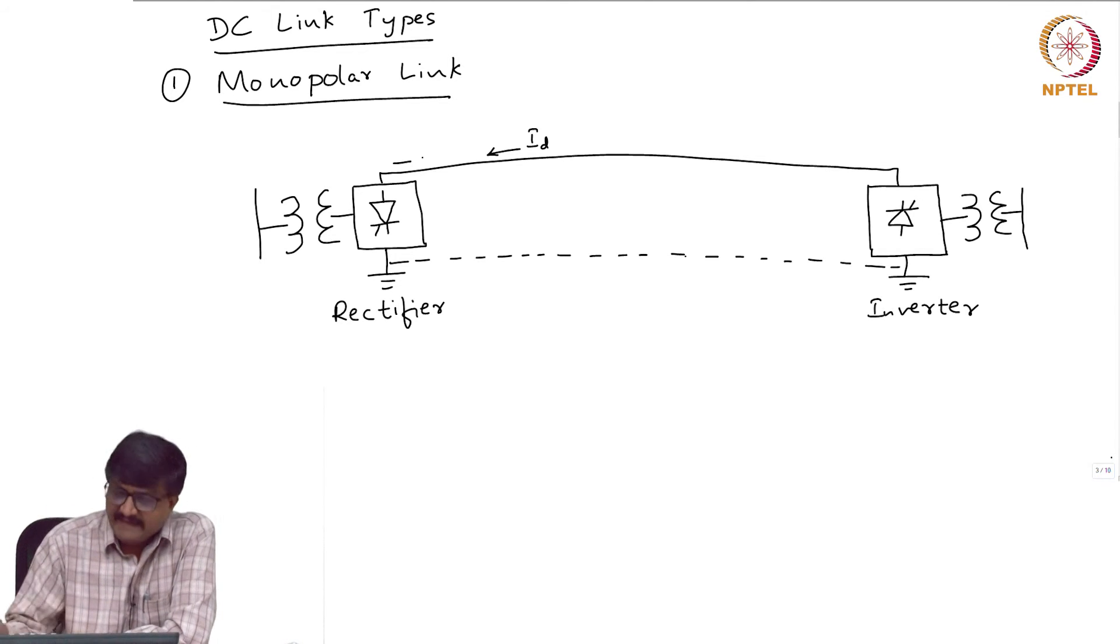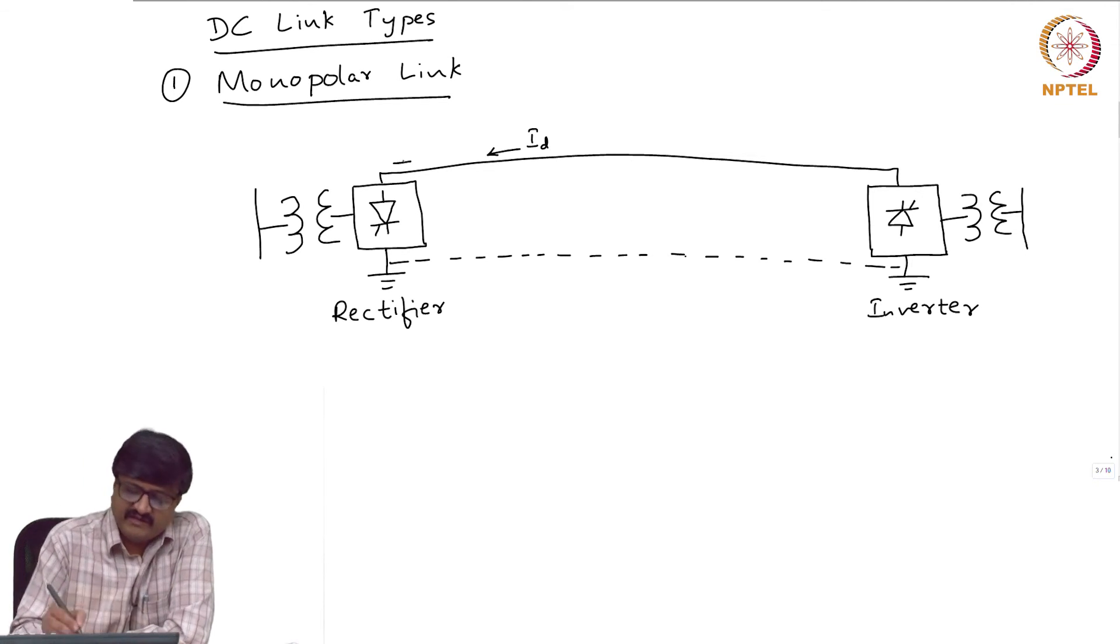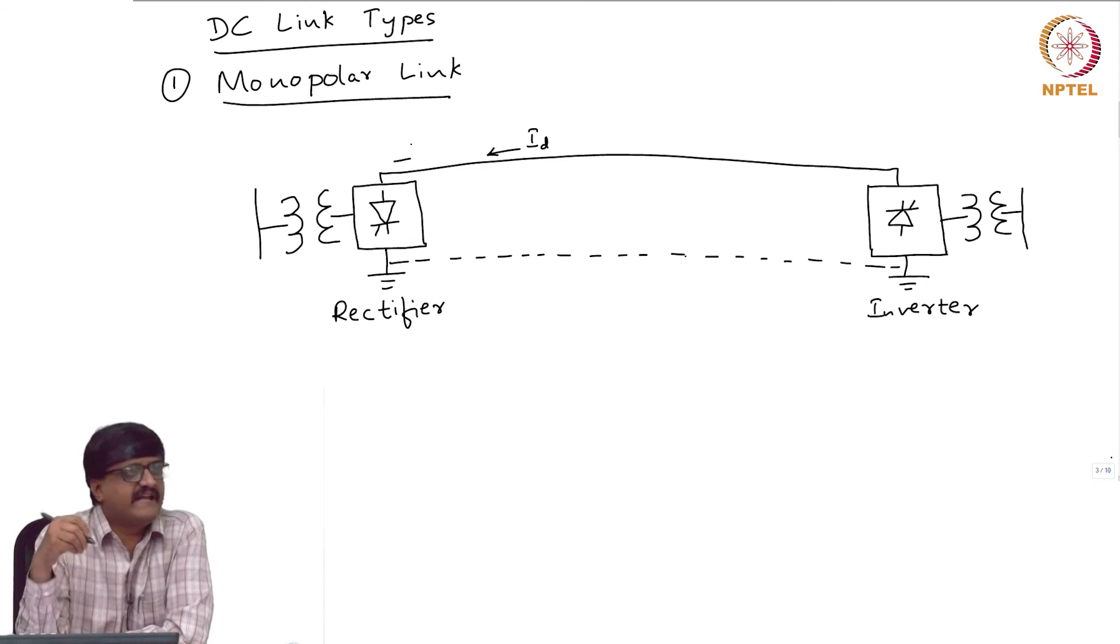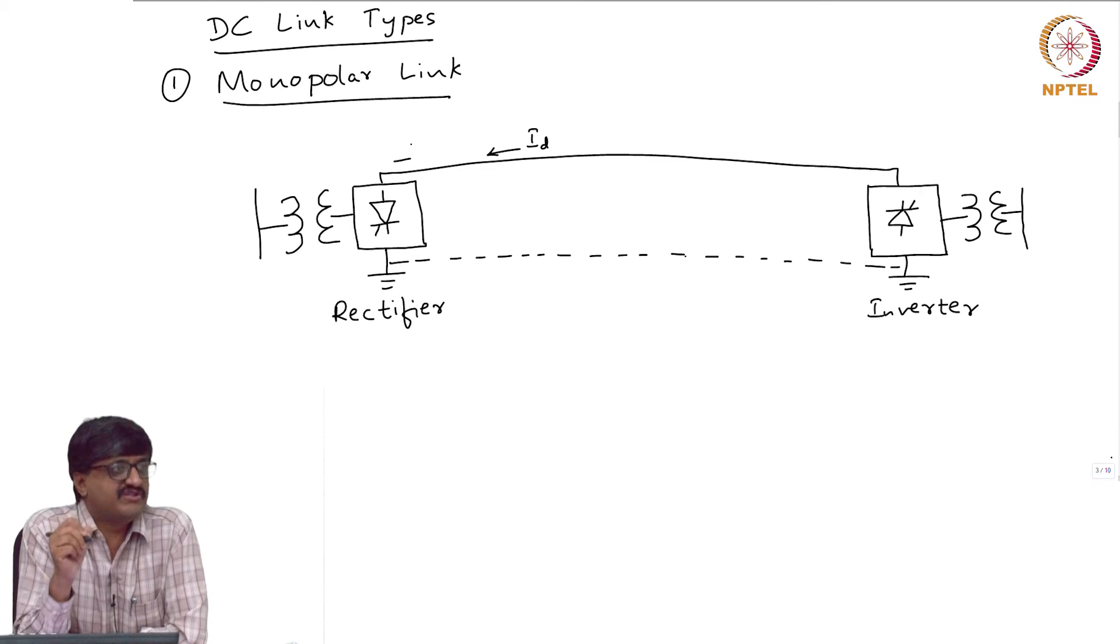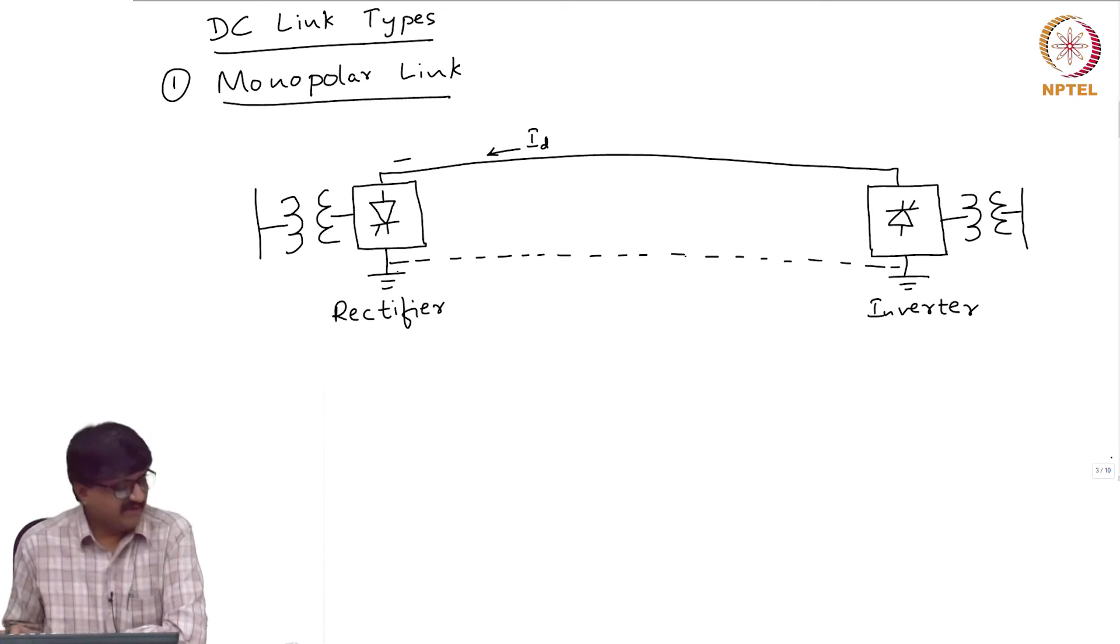I have two identical 12-pulse converters, one on the rectifier side, one on the inverter side. And I have shown a wire in which a current Id is flowing and I have marked a minus sign here. What I am trying to say is, by minus sign, this is the negative terminal of the DC side voltage. The other end or the other terminal is the positive terminal.